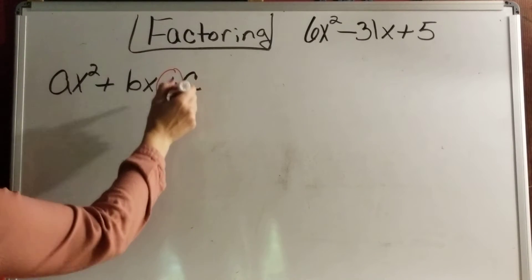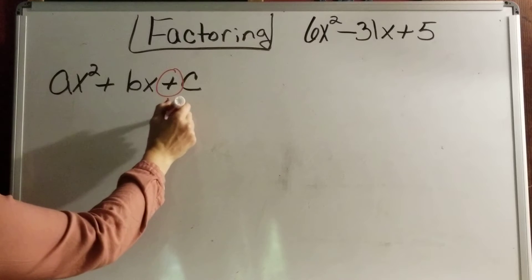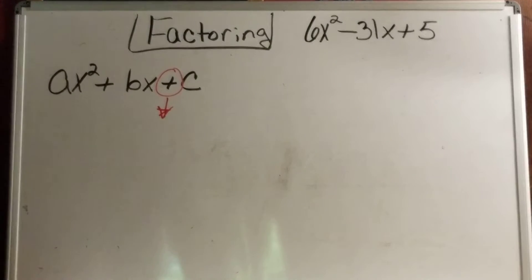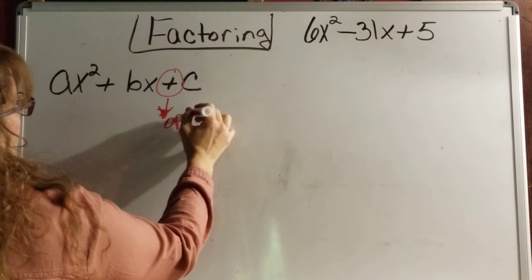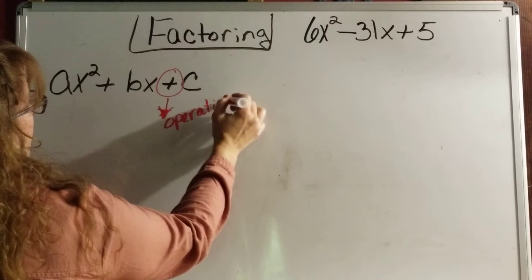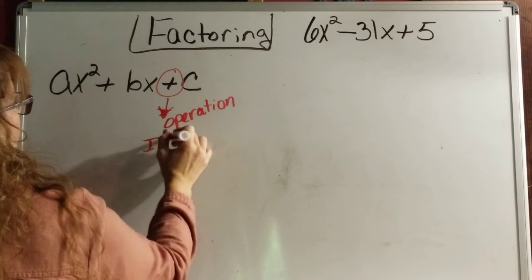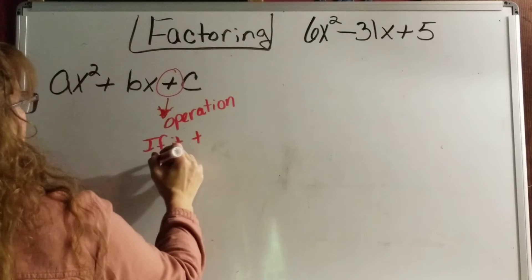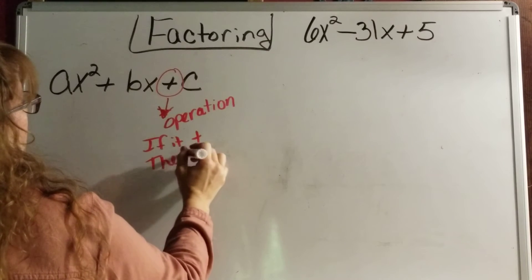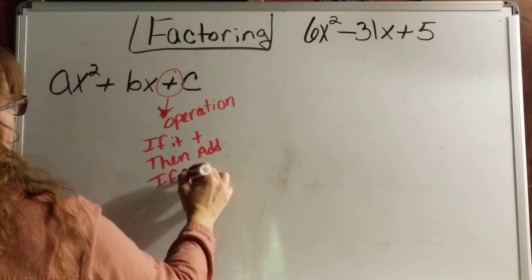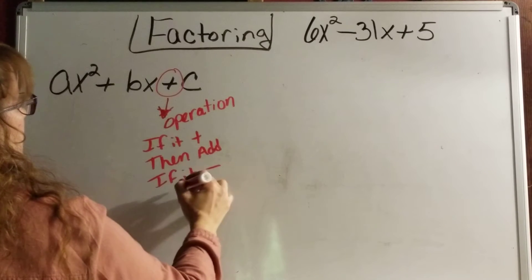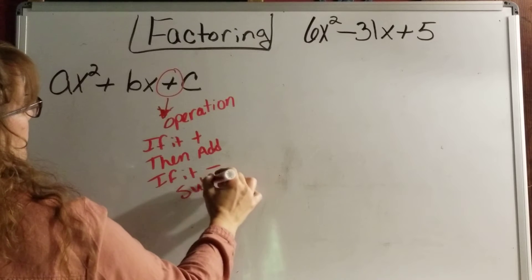So here's a little note. Whatever your sign is here, that tells me the operation. So this is the operation. If it is plus, then you add. If it is negative, then you subtract. That makes sense, right?